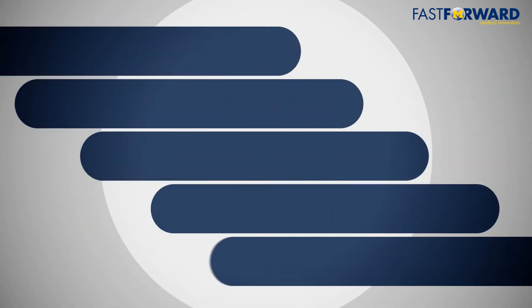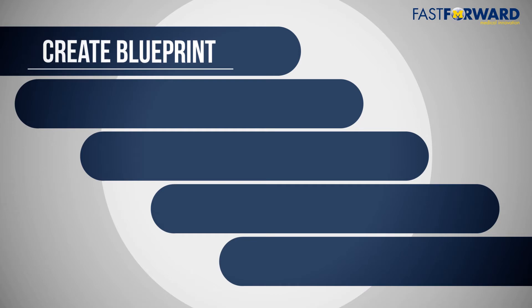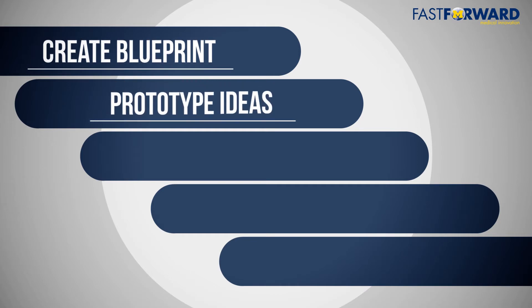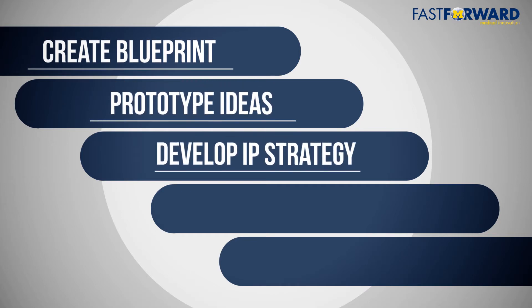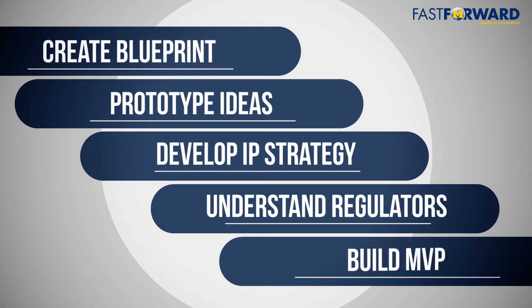To illustrate this, we can follow this roadmap: create a development blueprint, prototype ideas, develop an intellectual property protection strategy, understand how regulatory bodies will impact your development plan, and build the MVP, or minimum viable product.